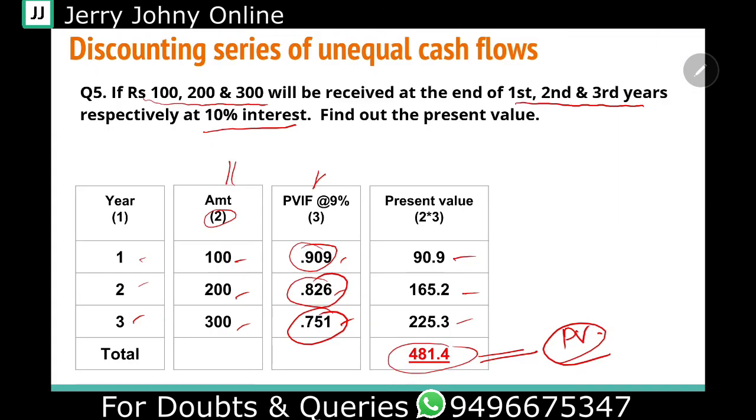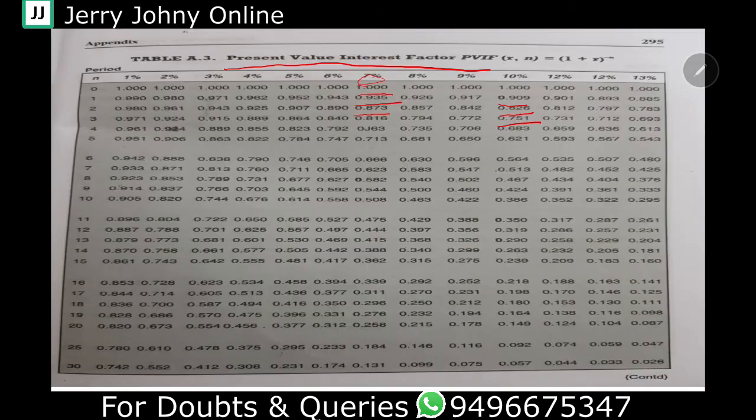So that is about discounting using unequal cash flows. Hopefully you've understood what this is. Thank you.